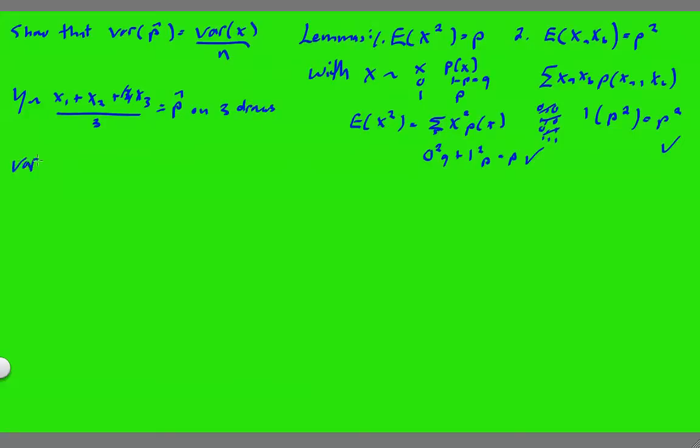So we know that the variance of y is just going to be equal to the expected value of y squared minus the expected value of y squared. Maybe my third lemma should have been, and you can see this in my other video if you don't believe me, but the expected value of this sample proportion, basically the one-third comes out of the expected value. And then you're just taking three expectations of the random variable itself, which is 3p, so it's 3p over 3, which is just p.